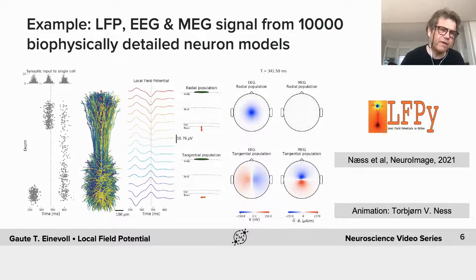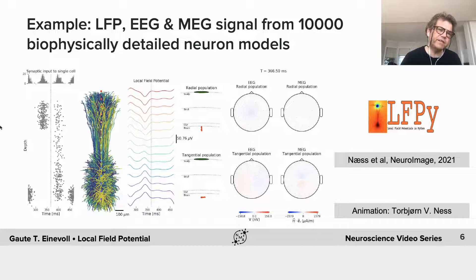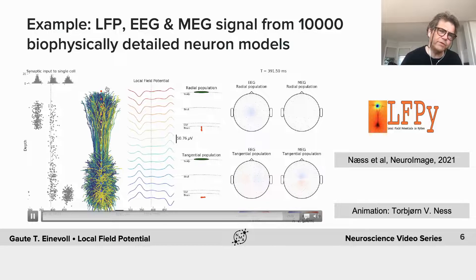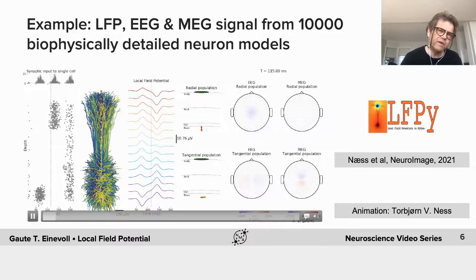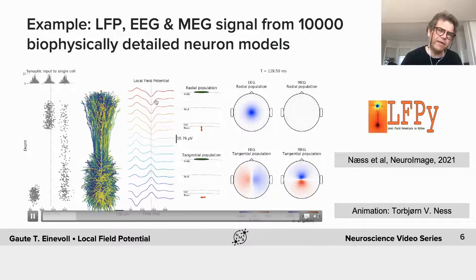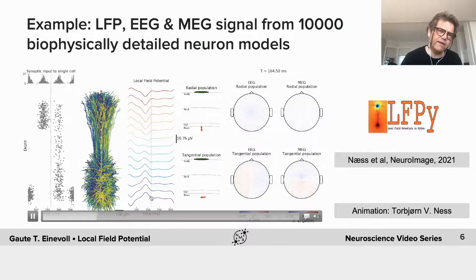So first we can see now the synaptic inputs are all over the bush and you see a very small local field potential. And then if it's all at the top, you get a negativity there, positivity here.